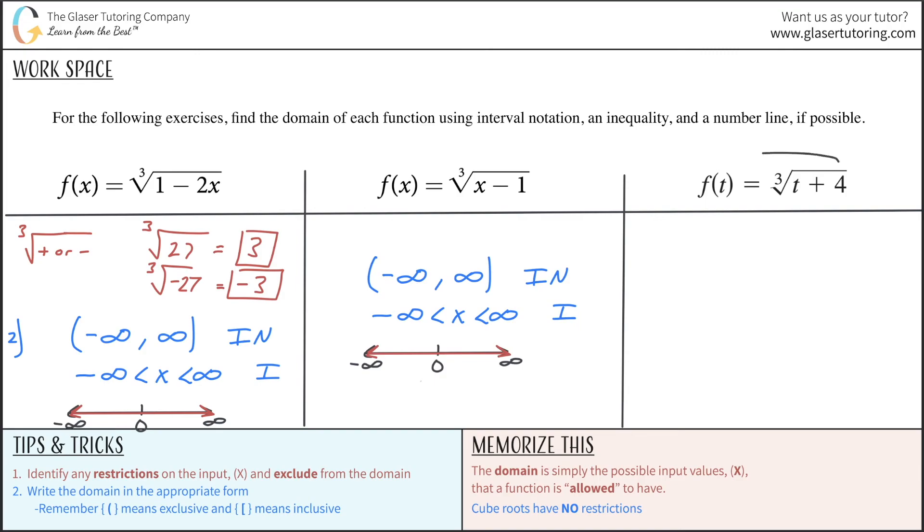And now similarly over here, there's nothing going on here, nothing crazy. I can plug in whatever number I want for t, it could be negative or positive. Cube root of a negative is fine. Cube root of a positive is fine. No restrictions whatsoever. So guess what? It's also the same answer there.